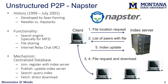As far as the mechanism: you had a centralized database which knew where all the files were. You could join this network by registering yourself with the index server and telling it what files you have. You would publish files by updating the server's index. Searching was just contacting the server to query for it. Fetching was a direct download from other nearby nodes.